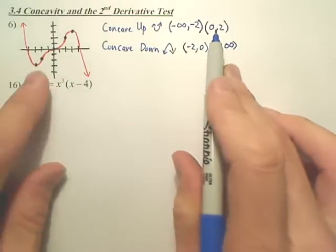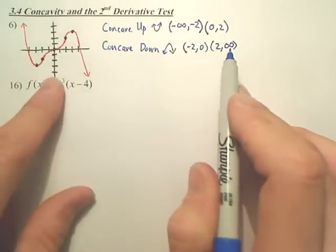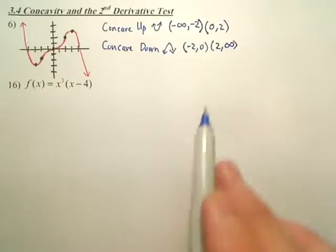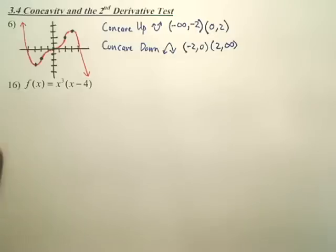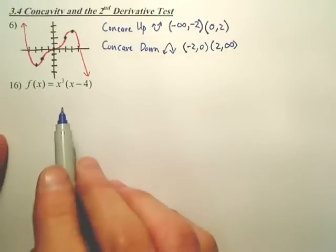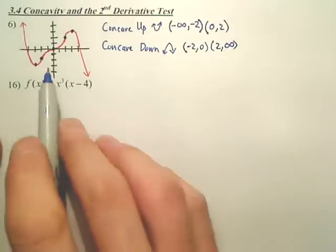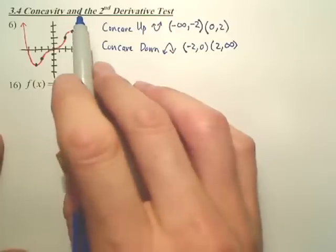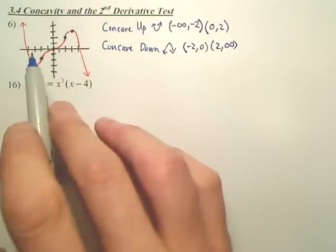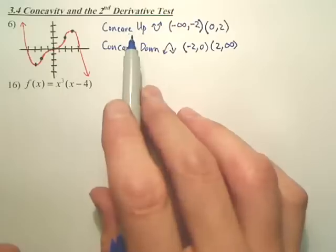So again, this is the intervals where it's happy. These are the intervals where it's sad, depending on the look of it. Think of it as a smiley face. Now you could also do a whole bunch of other stuff with this graph. You could find maxes and mins and so forth, but this situation just wants to know about concavity.